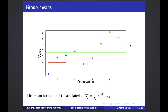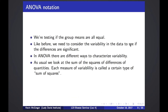We're interested in comparing differences between these means. As we did in the t-test and linear regression, we have the quantity of interest but we also have to consider variability to determine whether differences are significant. In the analysis of variance, there are different ways to characterize variability — which is why it's called an analysis of variance. We look at sums of squares of different quantities, which turns out to be a mathematically convenient approach. Each measure of variability is called a different kind of sum of squares.